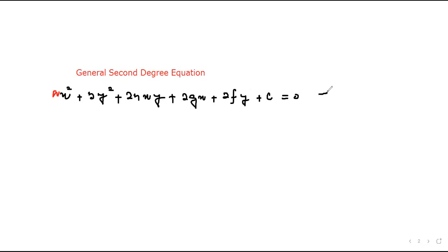Let's call this first, the general second degree equation. Now with the help of the coefficients of this general second degree equation, we will try to define a determinant.